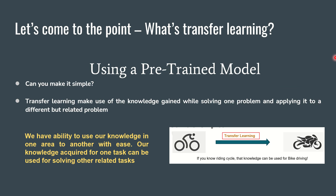What is transfer learning? We are going to make use of the knowledge that we gained while solving some other problem to solve something similar — that is called transfer learning. For example: I know driving a two-wheeler, can I use that knowledge to learn driving a car? I know driving a cycle, can I use that knowledge to learn driving a bike? We have the ability to use our knowledge in one area to another related area with ease.